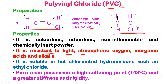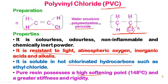PVC is resistant to atmospheric oxygen, inorganic acids, and bases. It is soluble in hot chlorinated hydrocarbons because vinyl chloride contains chlorine, making it soluble in chlorinated solvents like ethyl chloride, dichloromethane, chloroform, and carbon tetrachloride. The softening point of polyvinyl chloride is about 148 degrees Celsius.